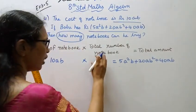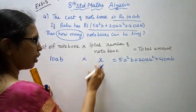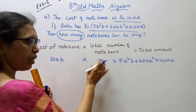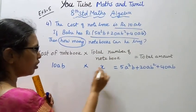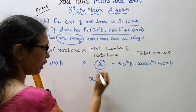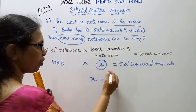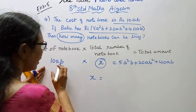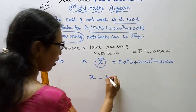You can see this. Total number of books equals 5a²b + 20ab² + 40ab divided by 10ab.